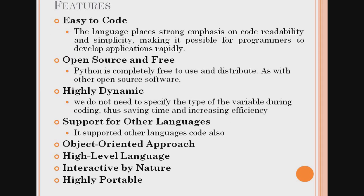Next, Python features: easy to code, open source and free, highly dynamic, support for other languages, object-oriented approach, high-level language, interactive by nature, and highly portable. Easy to code means the syntax is easy and understandable, very close to human language — readability and simplicity make it easy to code. Open source and free means freedom to use, freedom to modify, and freedom to redistribute.